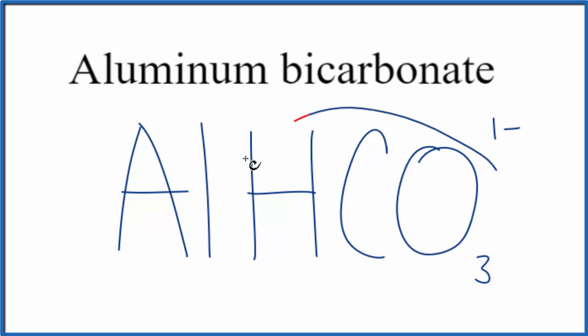So we know that the whole bicarbonate ion here has an ionic charge of 1 minus. Aluminum, that's in group 13, sometimes called 3A on the periodic table. It has a 3 plus ionic charge. So these need to add up to zero, give us a net charge of zero.